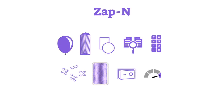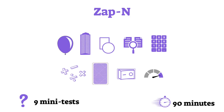The next test, ZAP-N, is the longest one on the list. It will take about 90 minutes to complete. That's because it is not a single test, but rather a set of nine gamified mini-tests evaluating your cognitive abilities and personality traits.